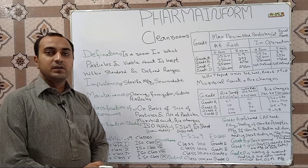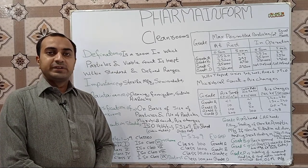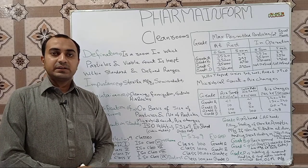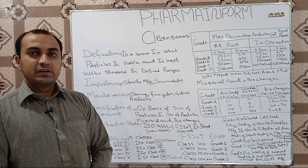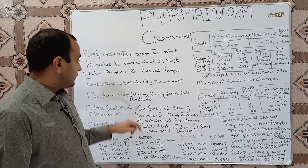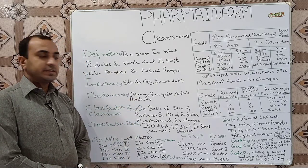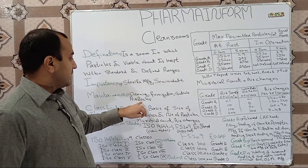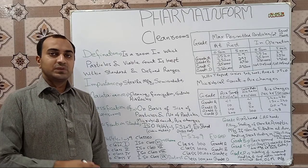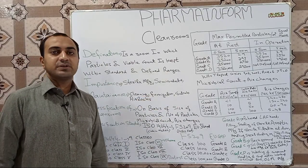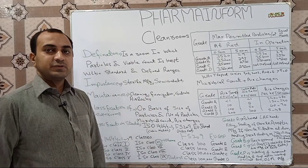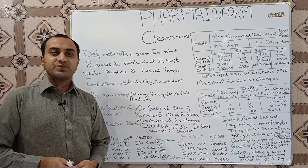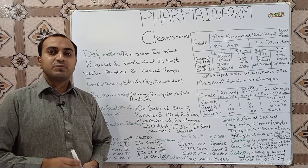How is the clean room maintained — meaning how do we maintain the cleaning class of our clean room? For this purpose we use critical cleaning, fumigation, different types of controls, and an airlock system. We will discuss these parameters in our next video.